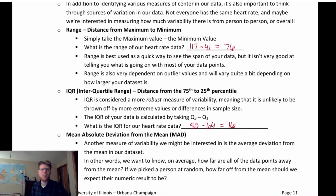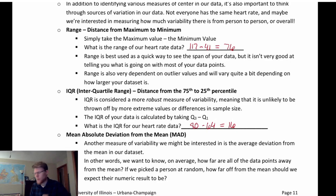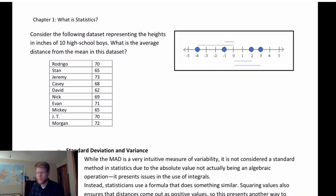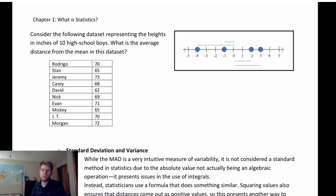The mean absolute deviation (MAD) may or may not be something you've seen before, like in an AP stats course. It's the average deviation of data points from the mean — the mean absolute deviation of our data points from the mean. We're going to visualize this measure because it's a helpful way to introduce standard deviation. Consider a small data set representing the heights of 10 high school boys. We're going to calculate the average distance from the mean in this data set, similar to how we'd calculate distances from zero for data points that average to zero.